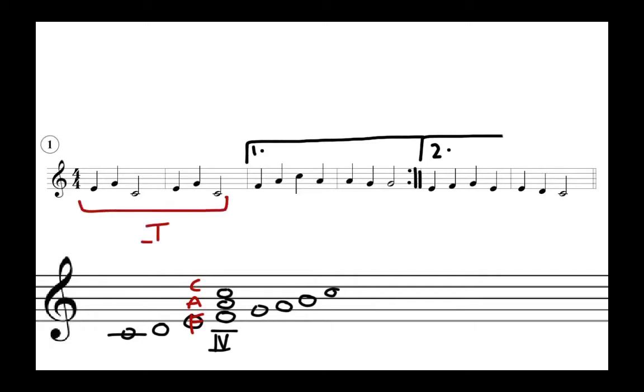But then it goes on. We have F, A, C, A, which definitely is the subdominant triad - the F, A, C. There's even one more A here, but by the time we get to the G and the G at the end of the first ending, it's no longer the subdominant.